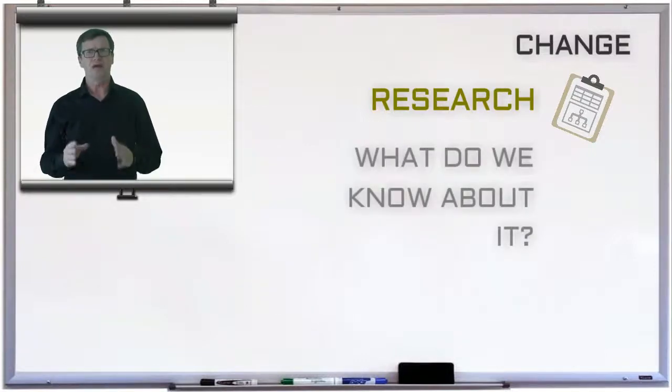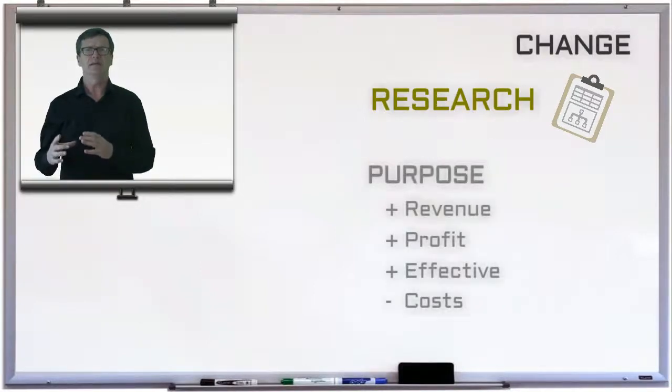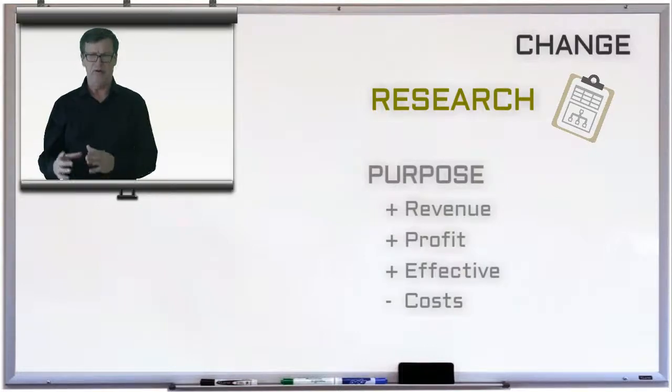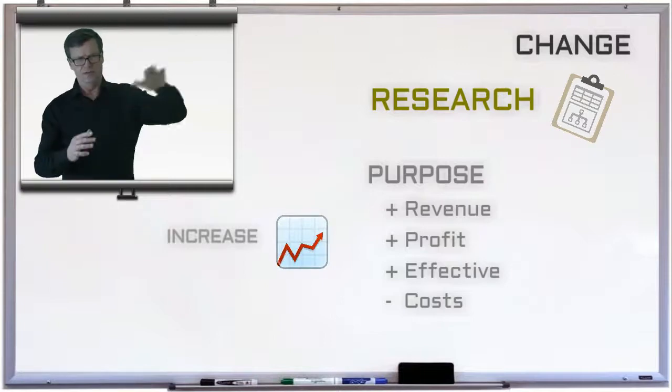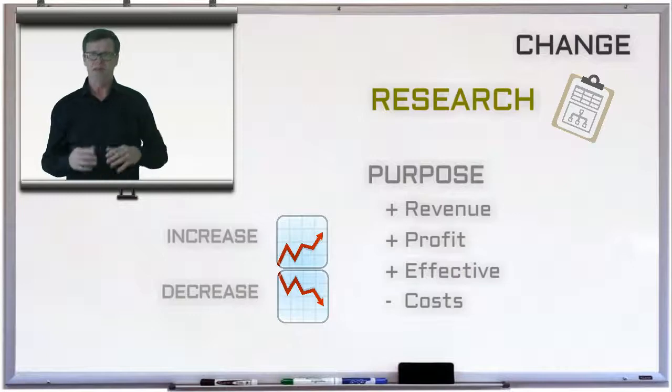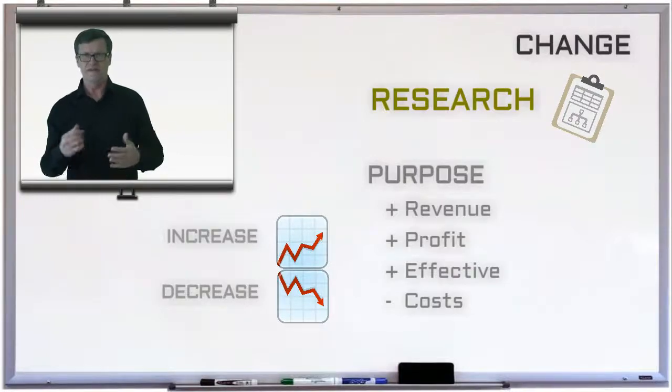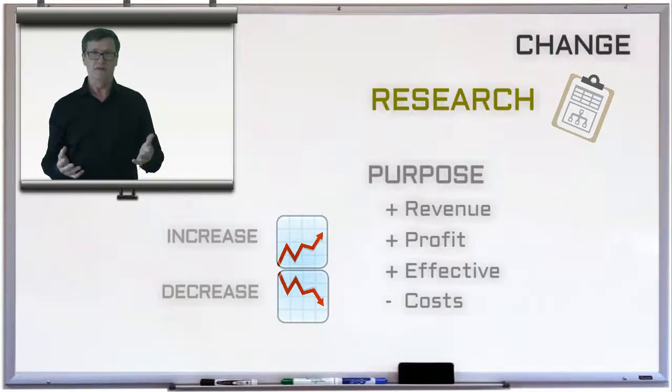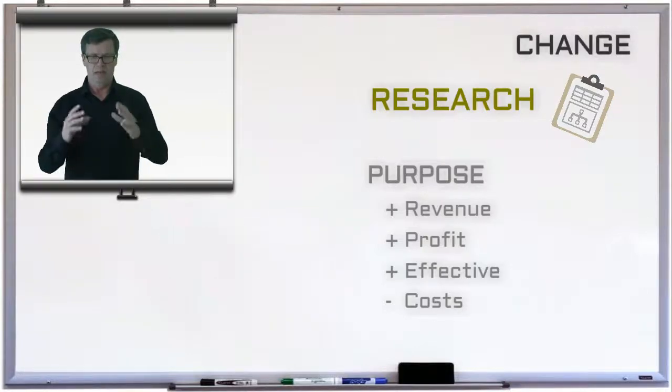Well, we could put the lessons Professor Kotter learned into three different buckets. Bucket one is filled with the different purposes for change: for example, to increase revenues or profits, or decrease our costs; to become more effective or more efficient in what we're doing, or both—increase revenue and profits, decrease costs, and become more effective and more efficient.